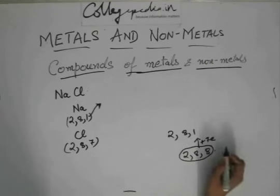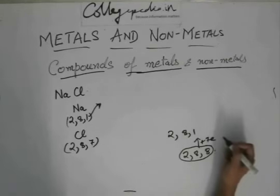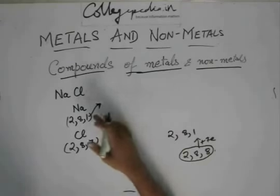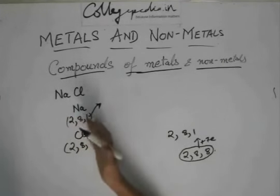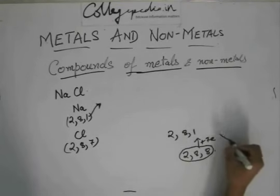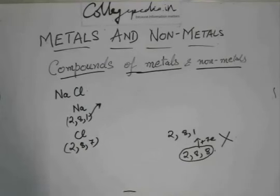But the problem is that adding 7 electrons requires a lot of energy than removing this 1 electron. This 1 electron will be more than happy to go out and easily give an electronic configuration of 2, 8. So, this actually never happens in sodium. You always have this 1 electron being given out.